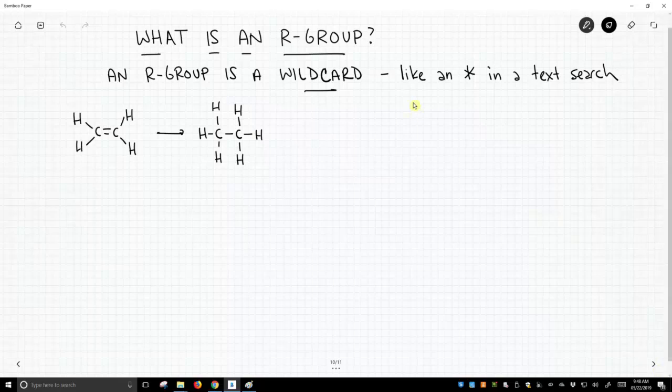So if you did a search in some text engines for asterisk ball, you might get a lot of different words returned. You might get football, you might get baseball, basketball, oddball, all kinds of words might come back.